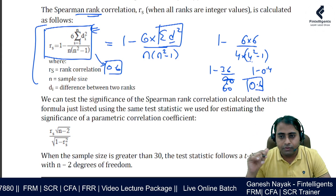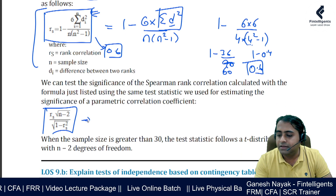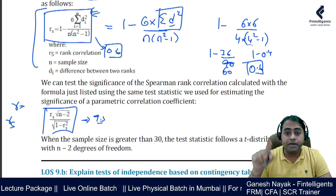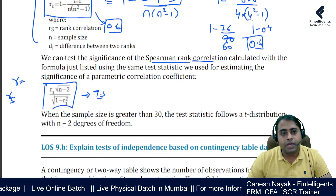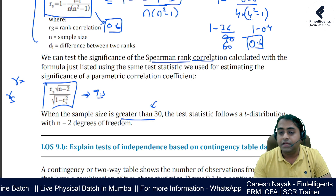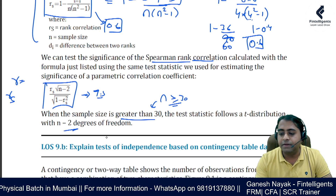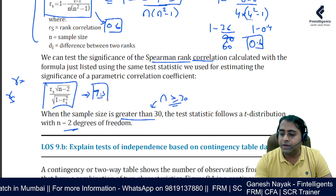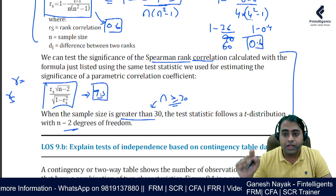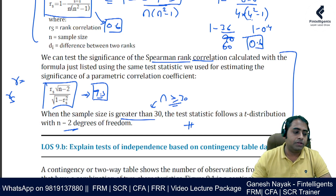For hypothesis testing using Spearman rank correlation, the approach is exactly the same as for Pearson correlation, except we use 's' (the Spearman rank correlation) instead of 'r'. The same t-test statistic formula applies, and degrees of freedom is n minus 2. When the sample size is greater than or equal to 30, we can assume approximate normality. We go to the t-table, find the critical value, calculate the test statistic, and either reject or fail to reject the null hypothesis.